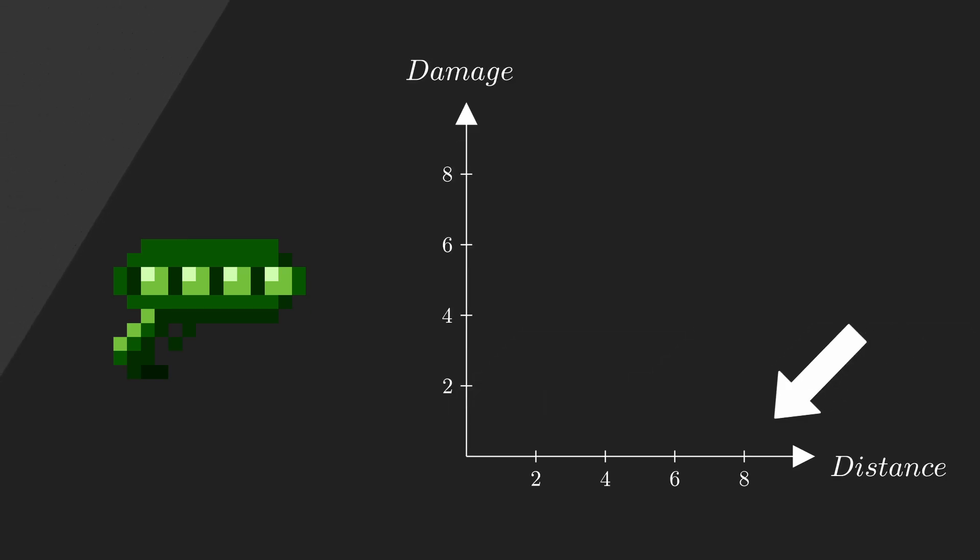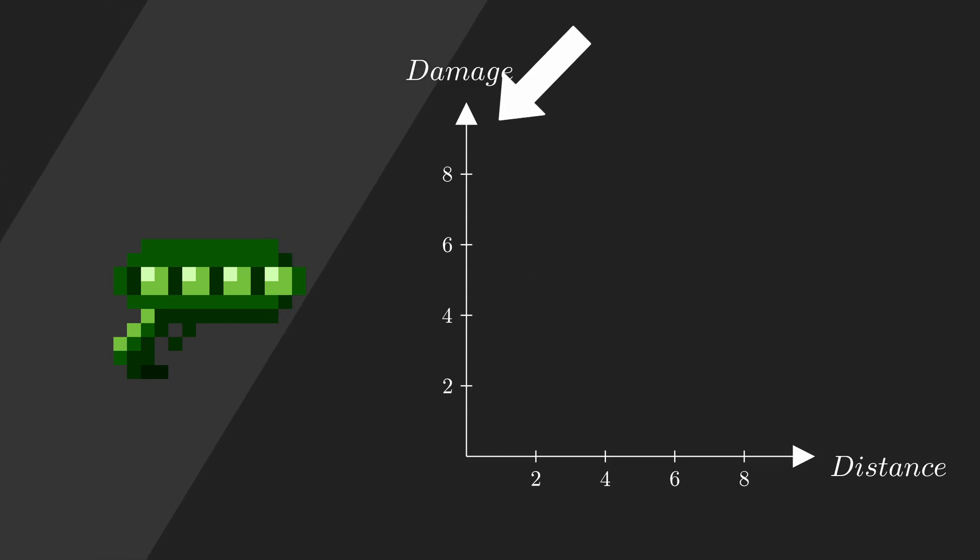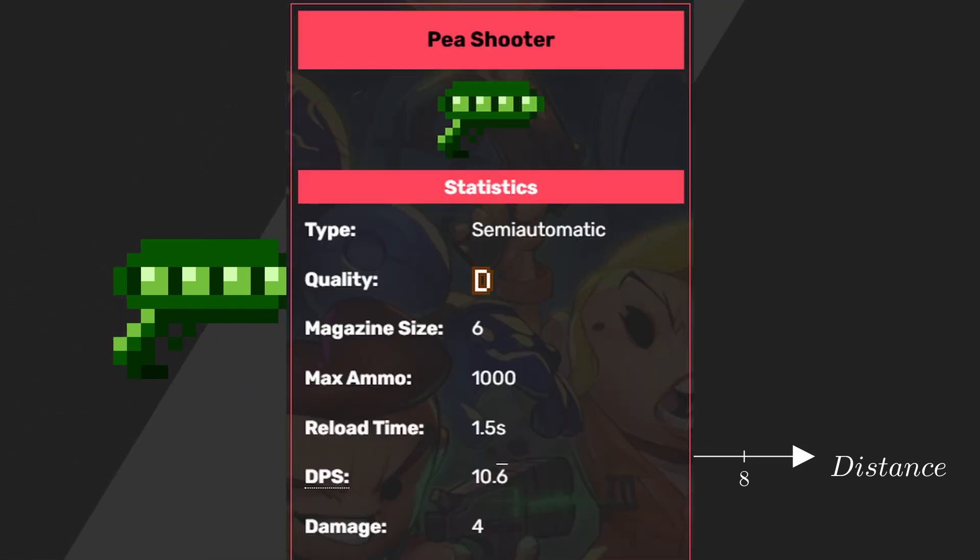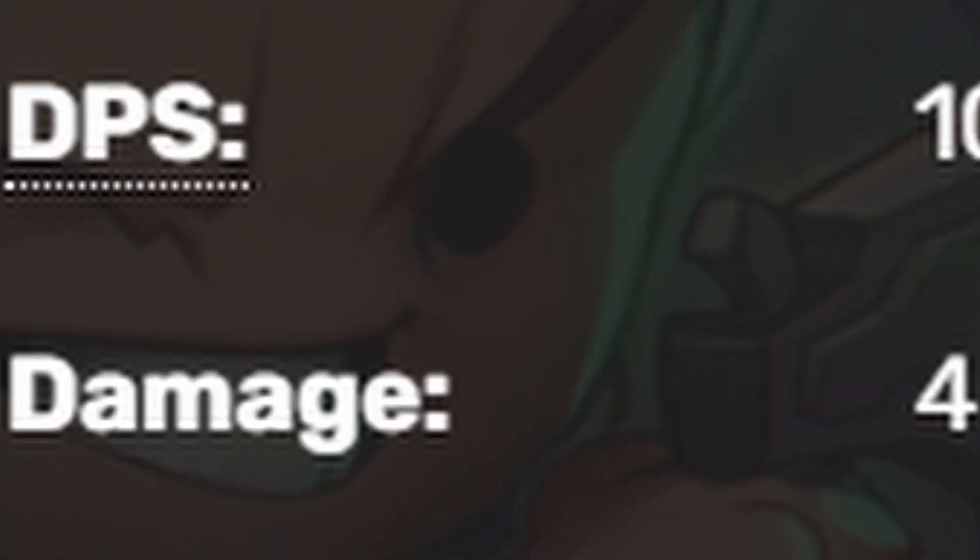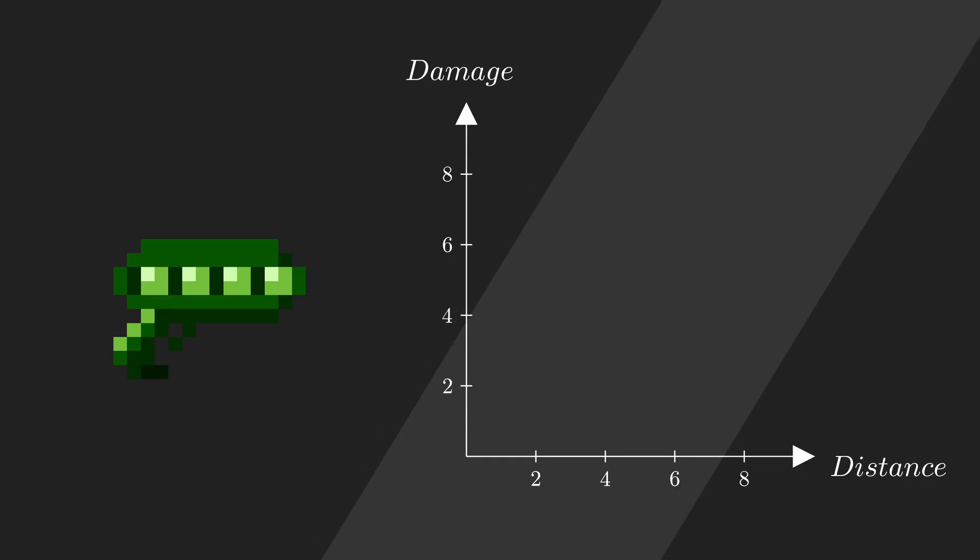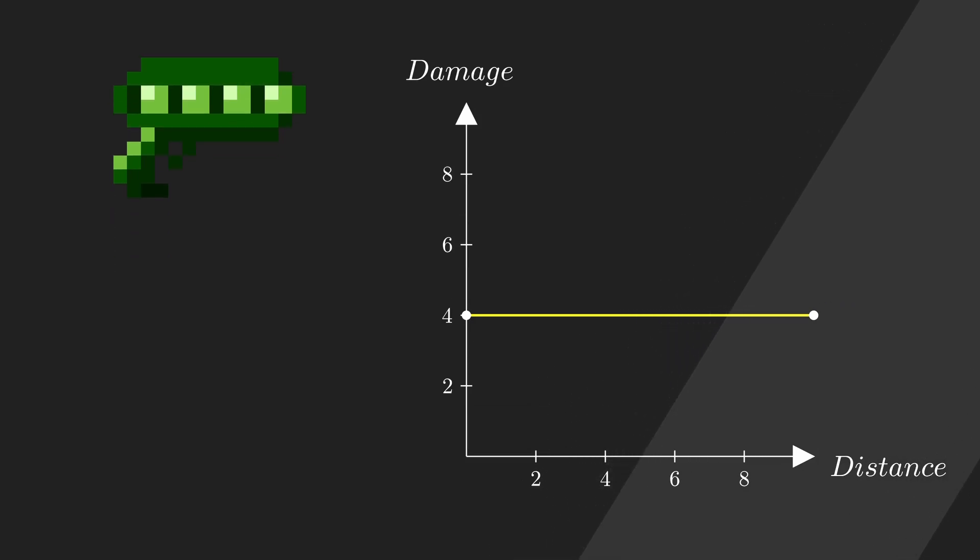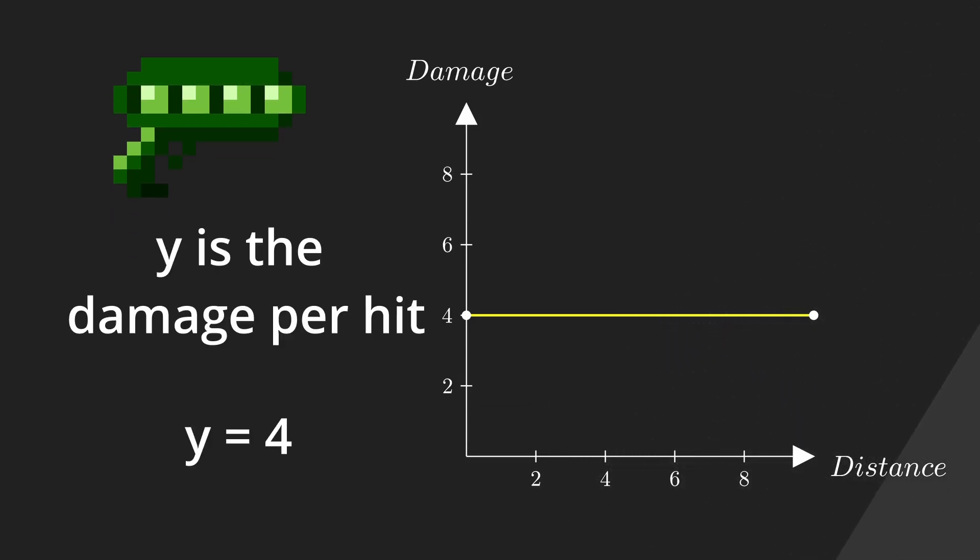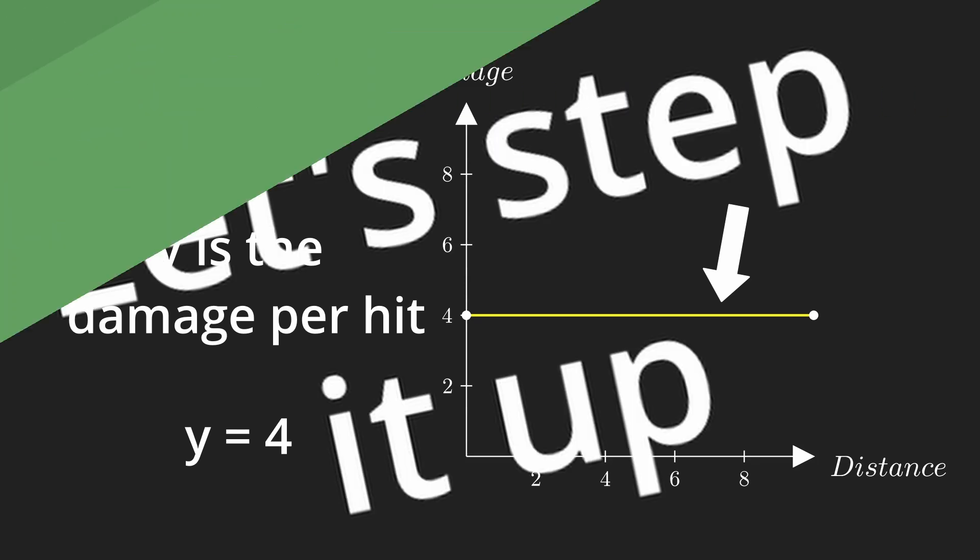That being distance the bullet travel on the x-axis, and the damage per hit on the y-axis. This gun does 4 damage per hit, with no damage drop-off. The equation for getting damage on this gun is y equals 4. It doesn't matter the distance the bullet travelled, all damage is the same. This is a bit boring, let's step it up.